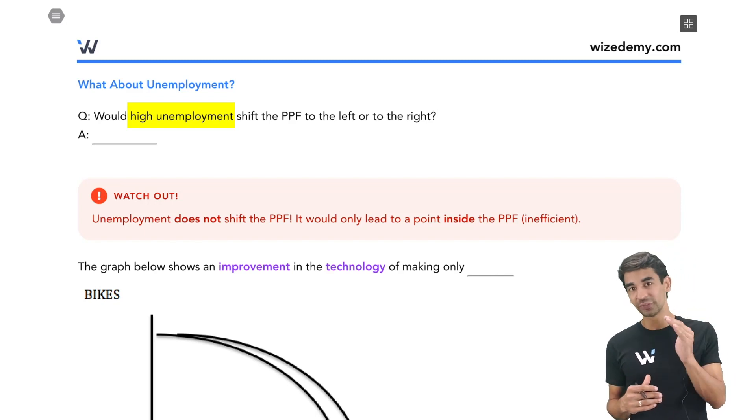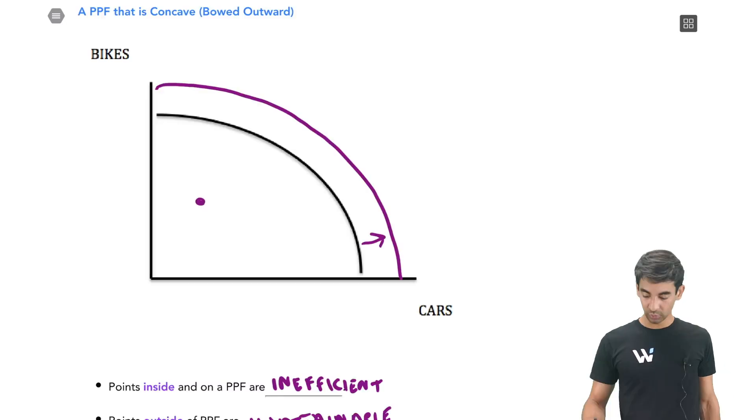But the PPF would not shift inward or left. That's what most students would say. Actually, you would say the PPF will not shift. It's going to stay the same. If there's high unemployment, we are just being inefficient. We would just be at an inefficient point inside the PPF. That would be high unemployment. So the line itself doesn't shift.